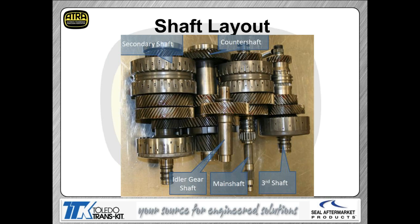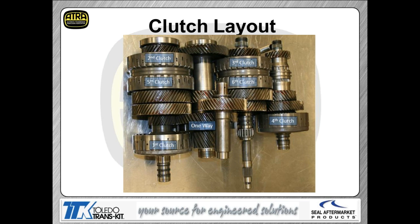Sean provided outstanding photos of the shafts showing exactly how the gear set sits in the transmission. The shaft on the left is the secondary shaft, the middle is the countershaft, then the idler gear shaft, the main shaft, and finally the third shaft. Note the third shaft — between those small gears you'll see a shift sleeve, which is the only mechanically shifted element in this transmission: it's your reverse, and it uses a shift fork just like many manual transmissions.